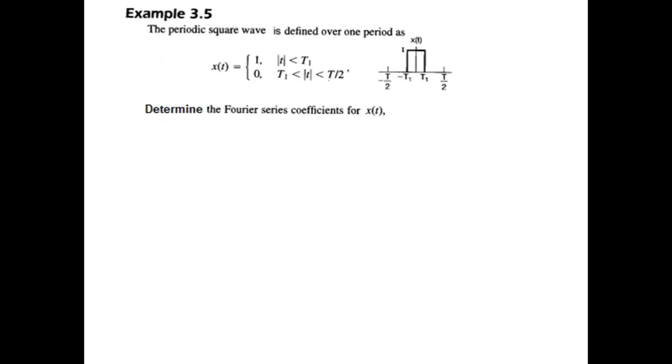This is Example 3.5, where the signal is defined as having value 1 for |t| < t1, meaning t plus or t minus is less than t1, which has been plotted here.